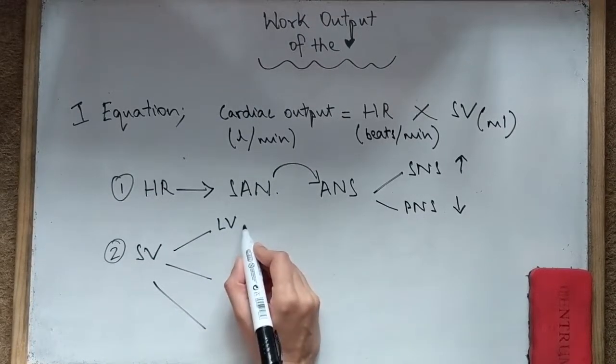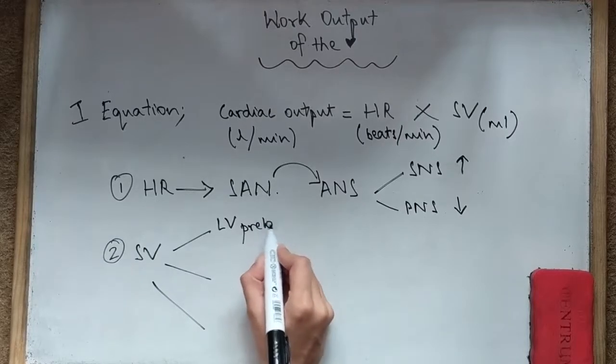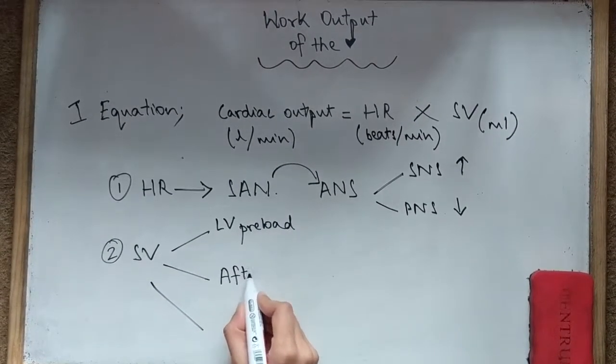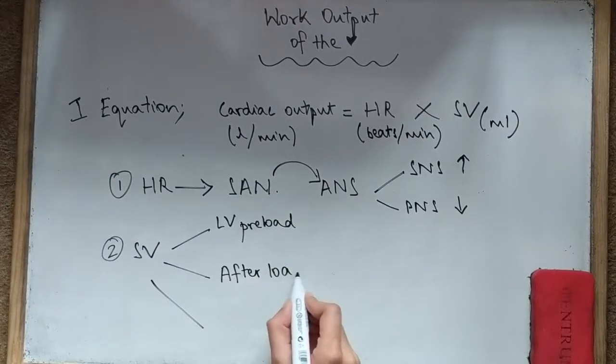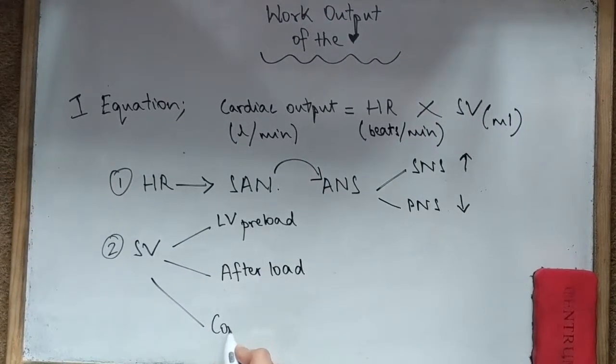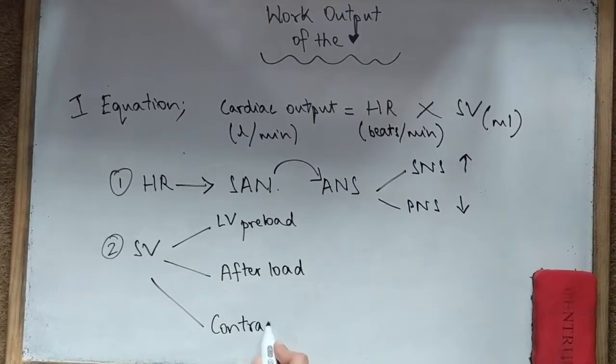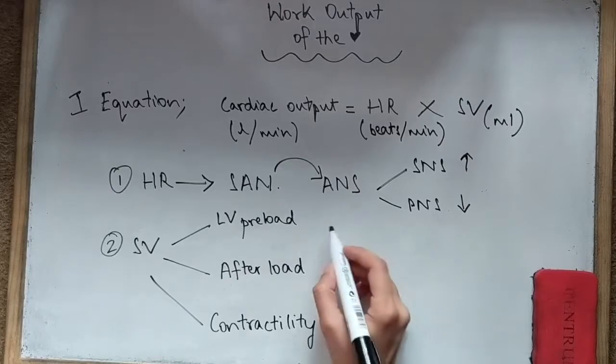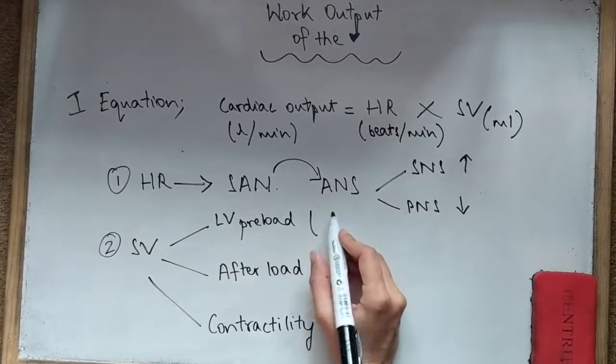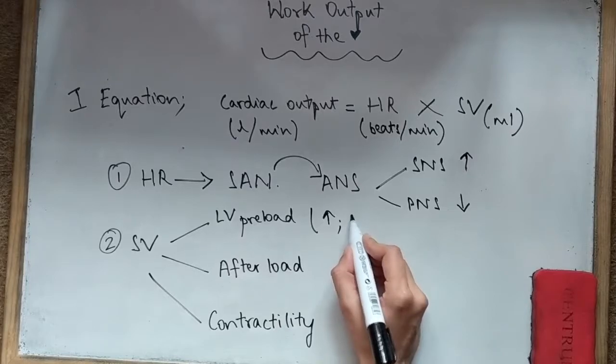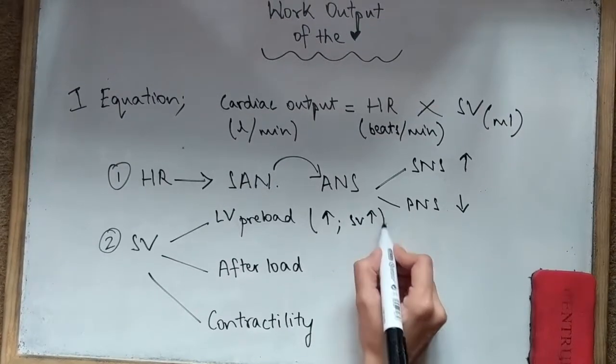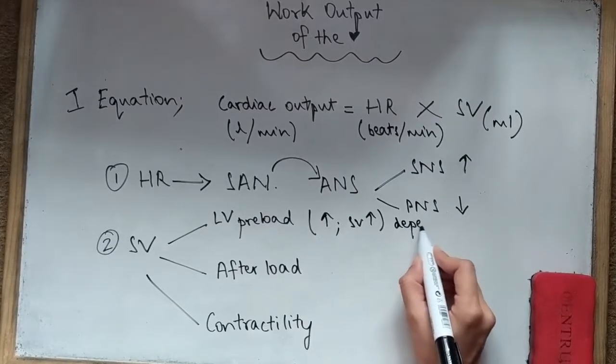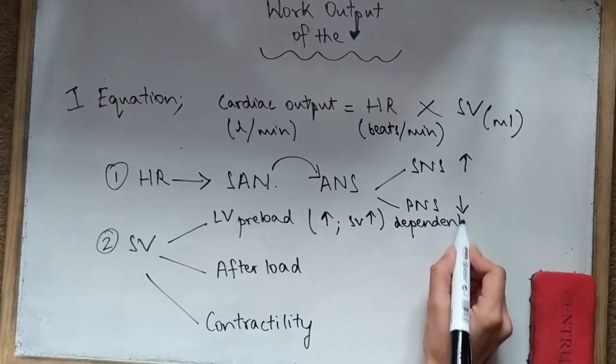After that, we speak about the stroke volume. Stroke volume is dependent on three things: the left ventricle preload, the afterload, and finally the contractility. The preload is the volume of blood entering the chamber during diastole, and it is dependent on two things.